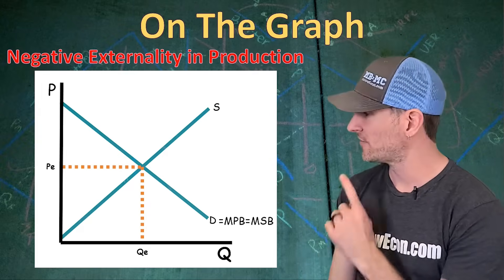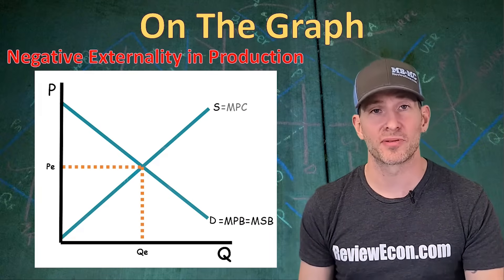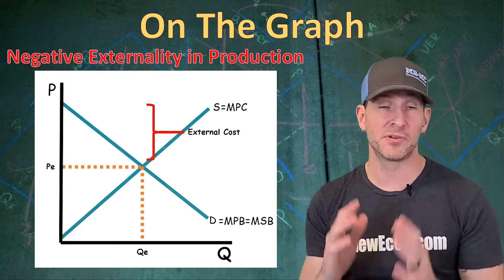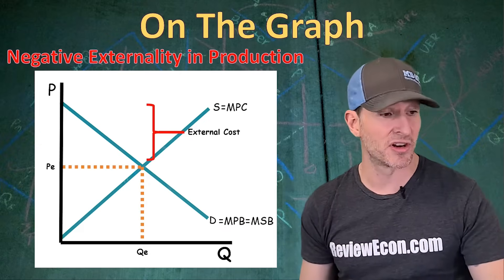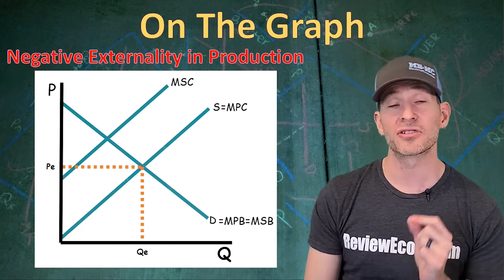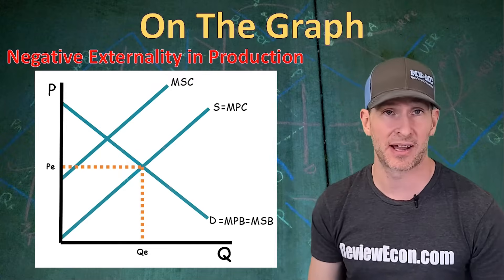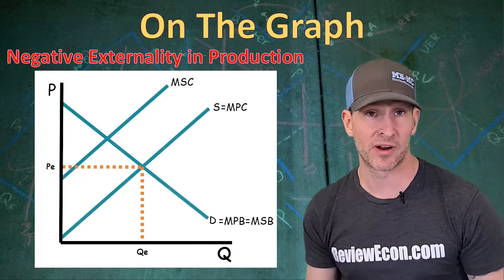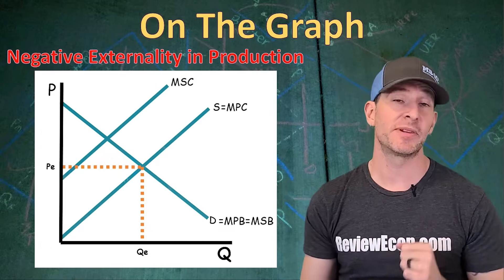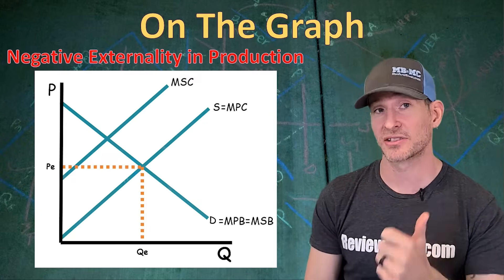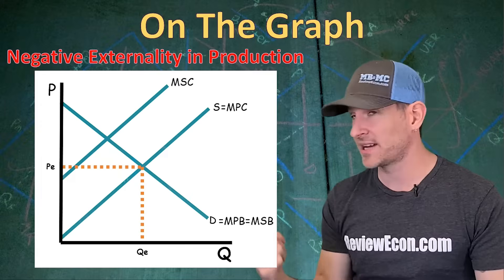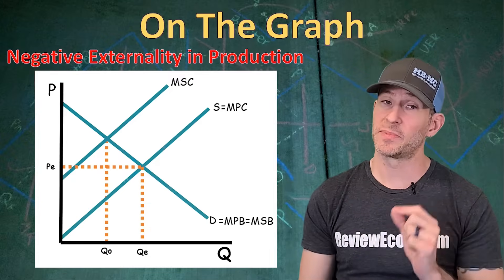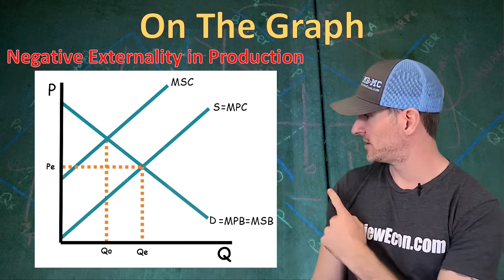The supply curve is the marginal private cost — the cost producers face from producing this product. But there is an external cost to people who don't buy the product. That external cost is added to the marginal private cost to give us a marginal social cost curve that sits above the supply curve. The allocatively efficient or socially optimal quantity is found at the intersection of the marginal social cost and marginal social benefit curves, labeled QO — not at the market equilibrium quantity.